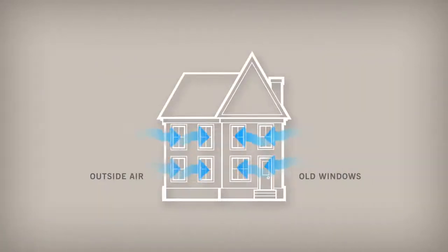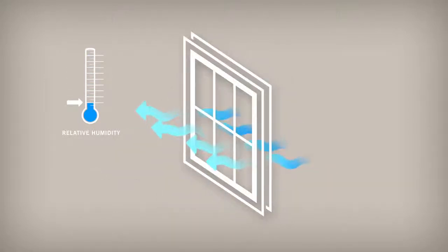If you hadn't noticed condensation before, it may be because your old windows were letting outside air into your home. When outside air leaks into your home through drafty windows, the relative humidity inside is lowered and condensation is less likely to form.